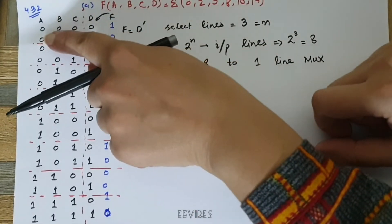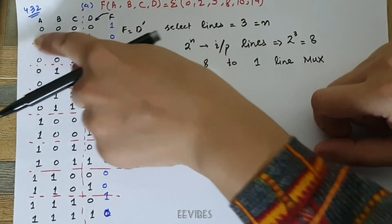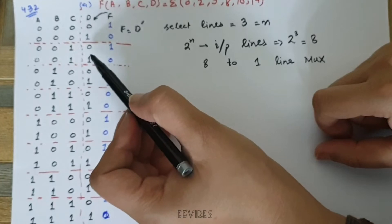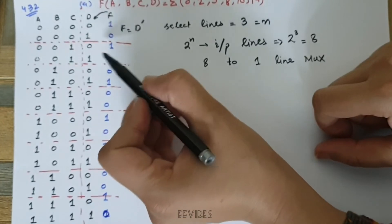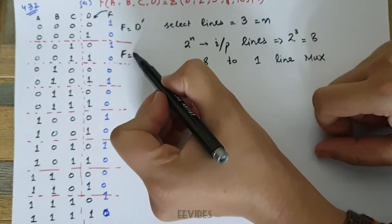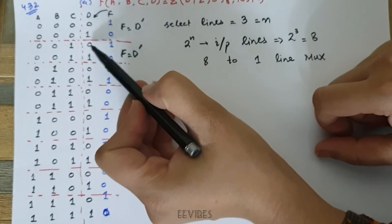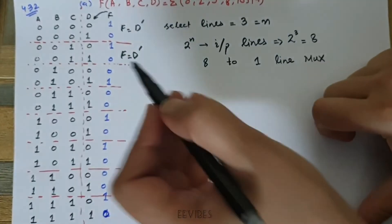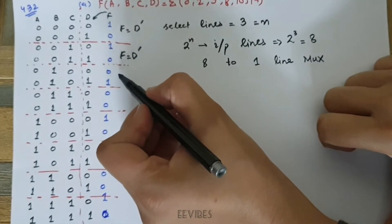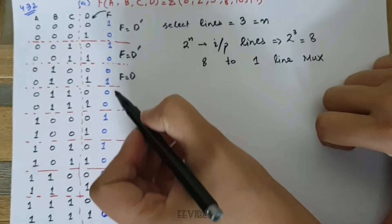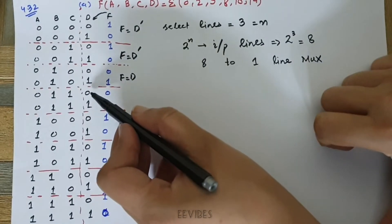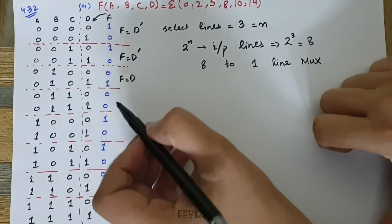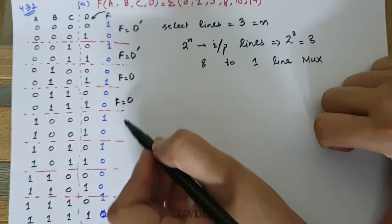Similarly, when A and B are both 0 and C is equal to 1, F is again equal to D complement, because when D is 0, F is 1 and when D is 1, F is 0. In the next case, F is equal to D. Then there is a case where the function value is 0 even though D is changing, so F equals 0 in that case.